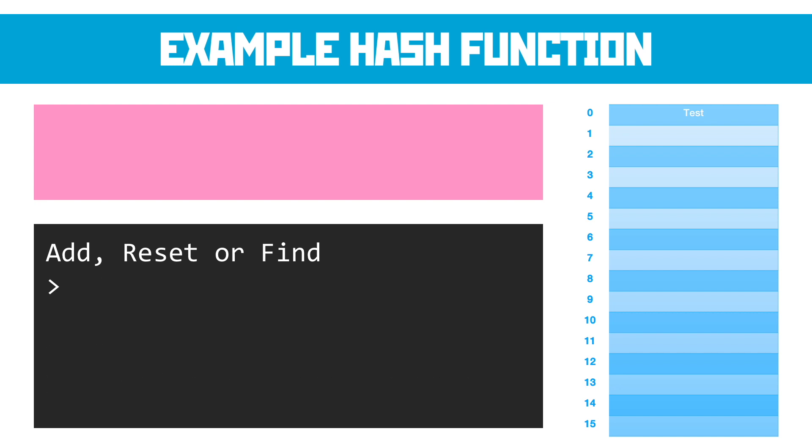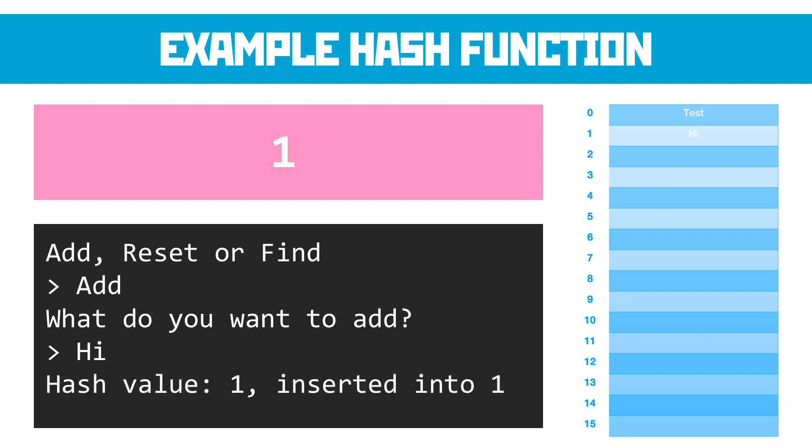Now if I want to find that piece of data, it would calculate the same hash number and I'd be able to find it in the same place. So let's add another piece of data just to see how that works. Let's add high. We'll do the same thing. We'll convert those letters to numbers, add them together and modulo 16 that, which gives us a remainder of 1. So that goes in location 1.